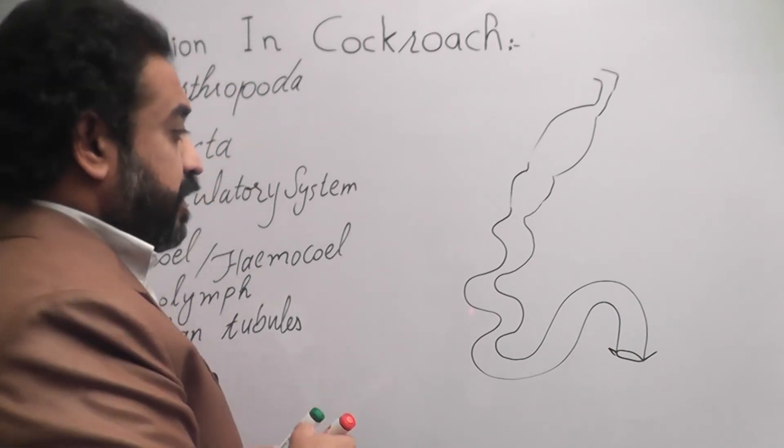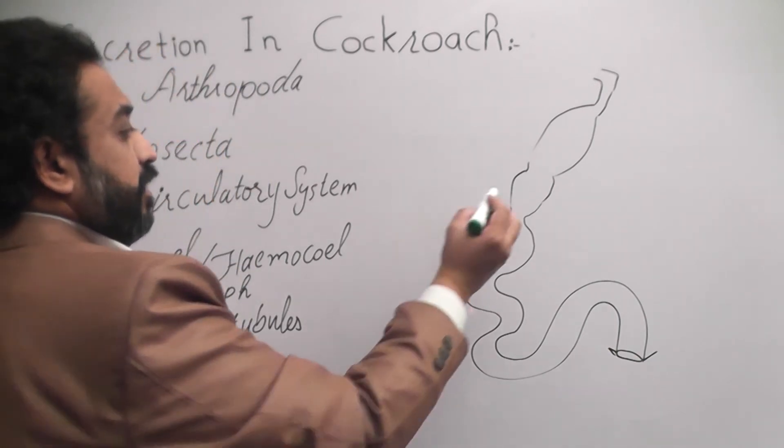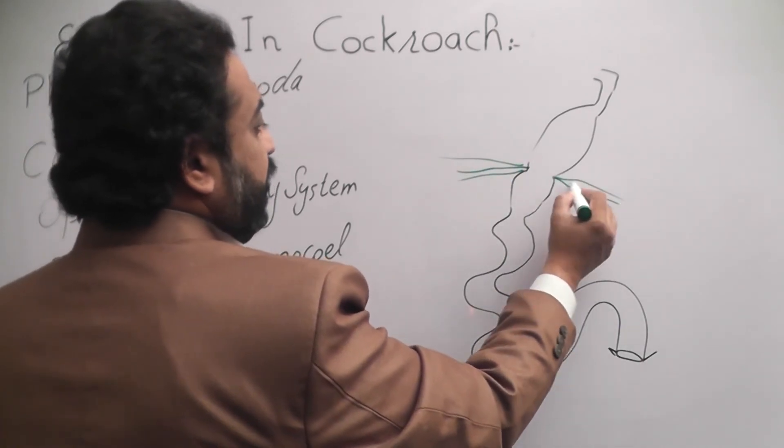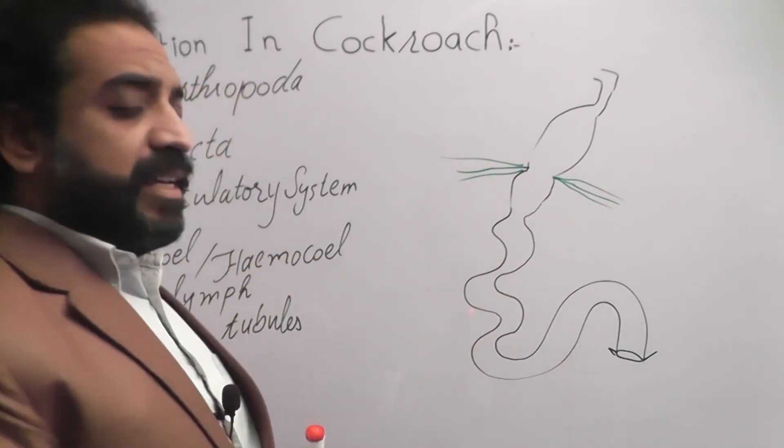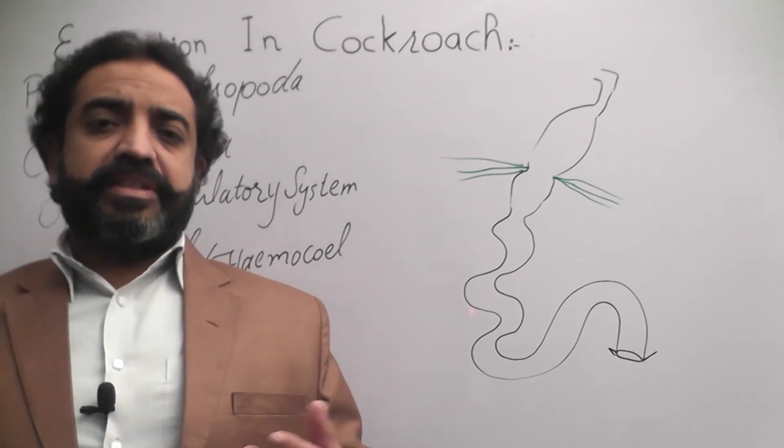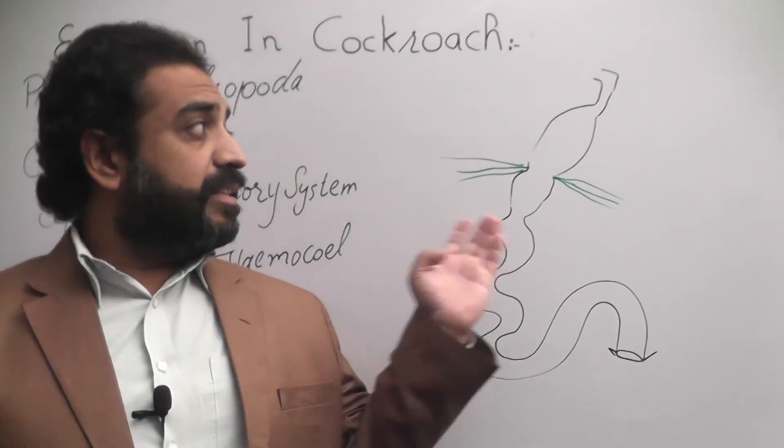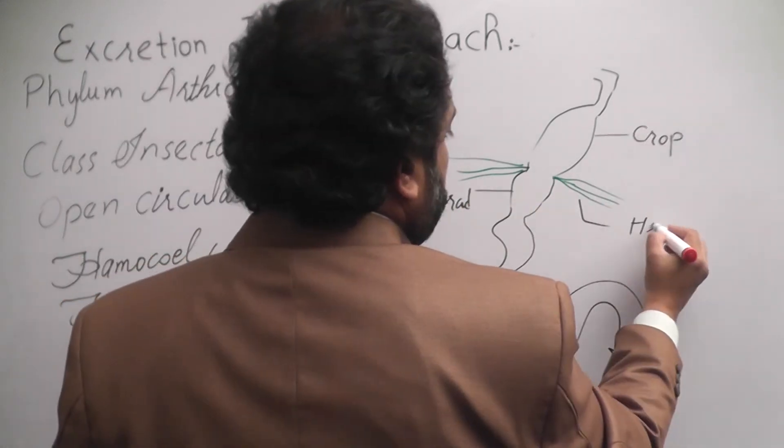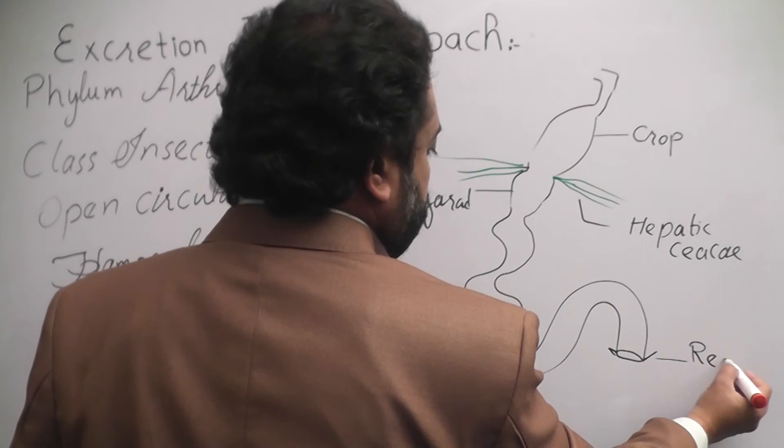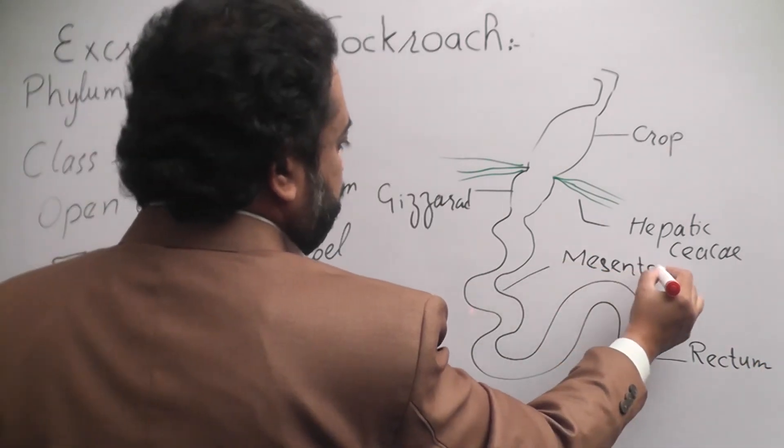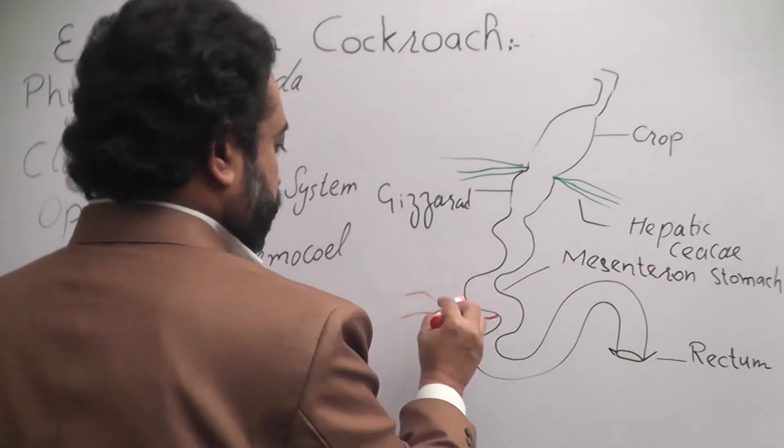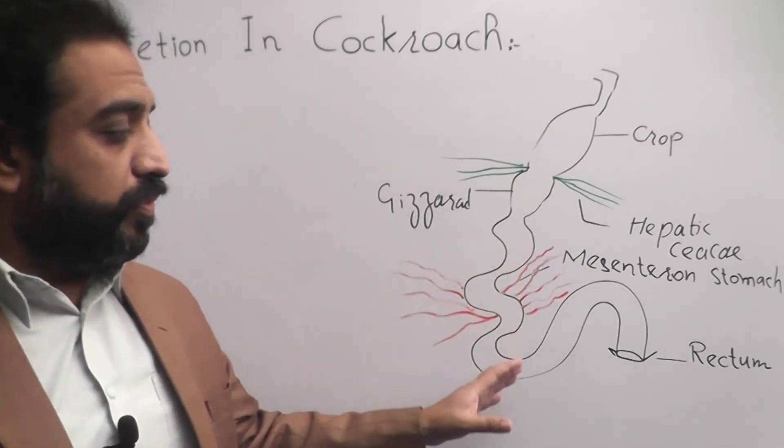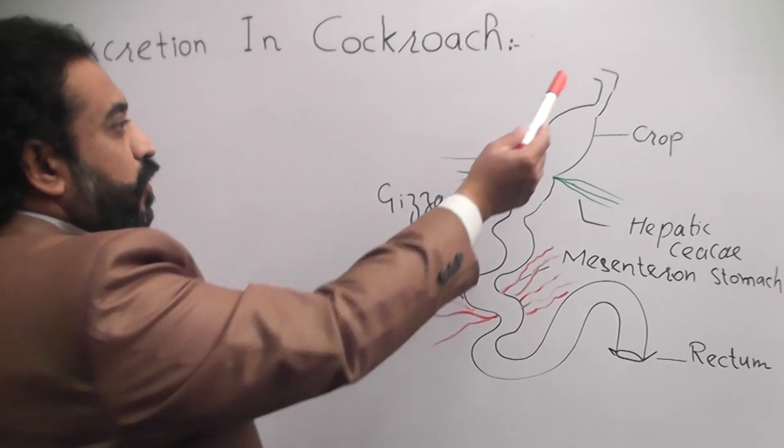These animals have specific structure for the digestive tract of the cockroach. It is the digestive tract of the cockroach. My dear students, here is the oral cavity.